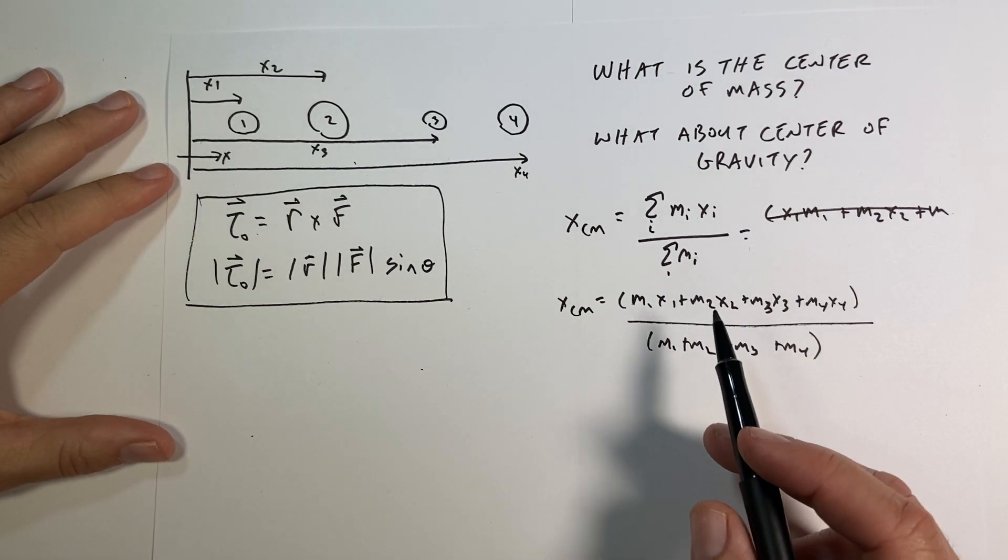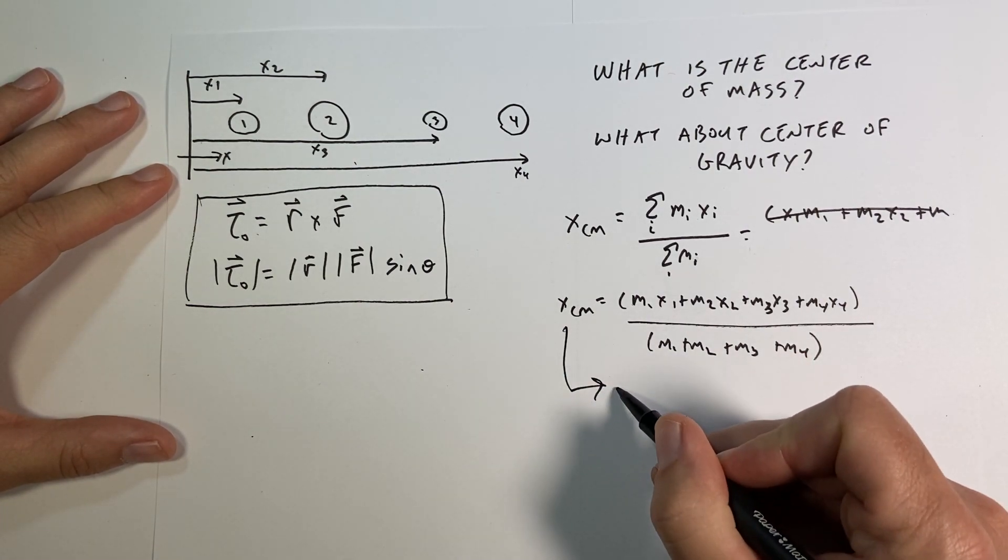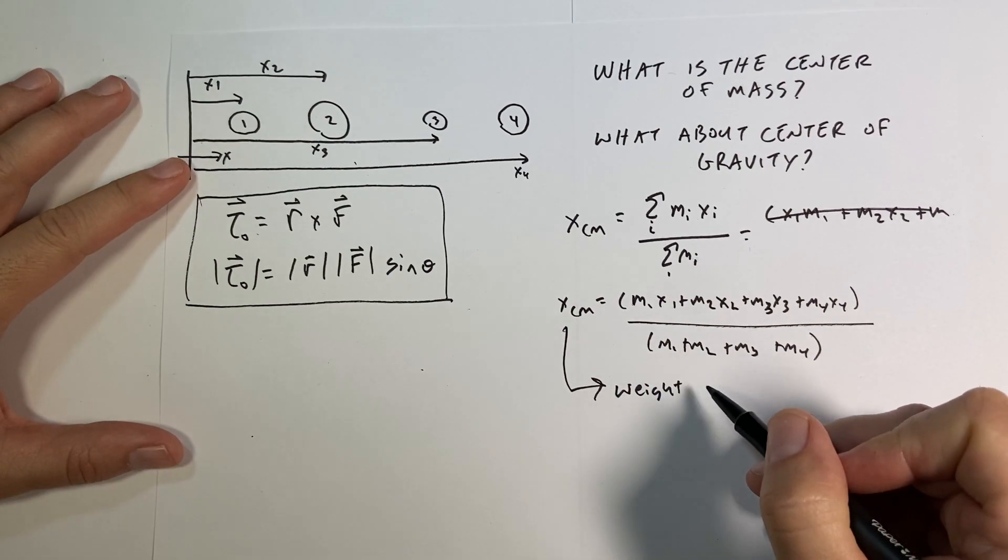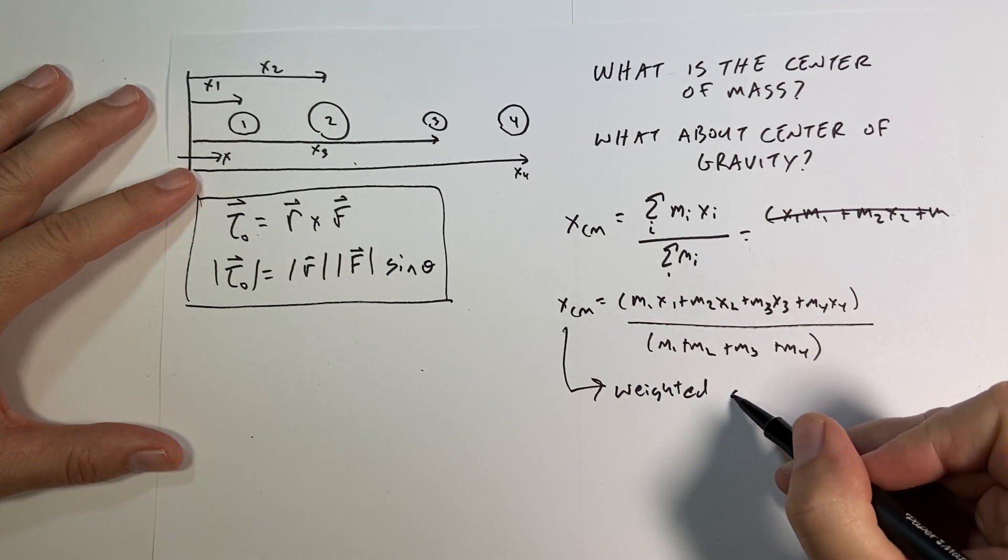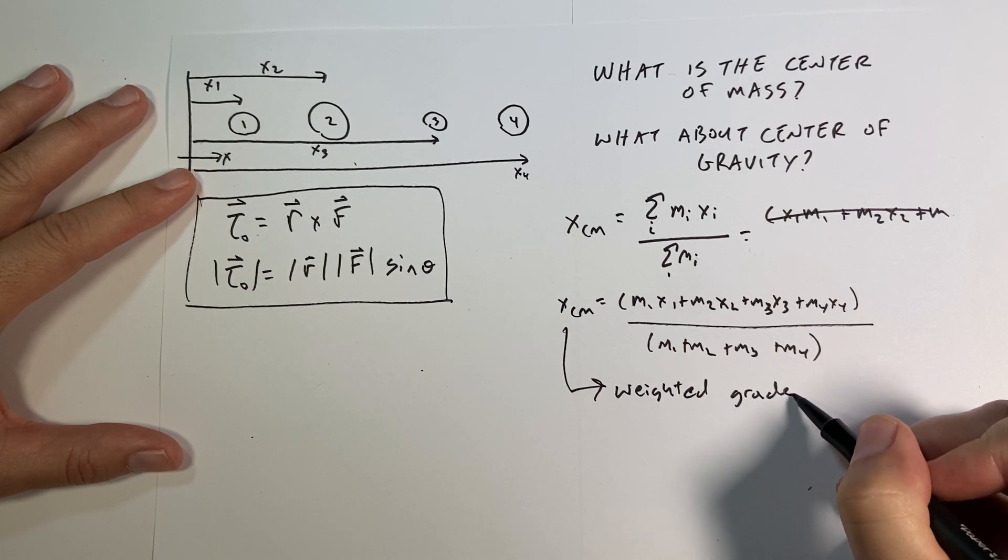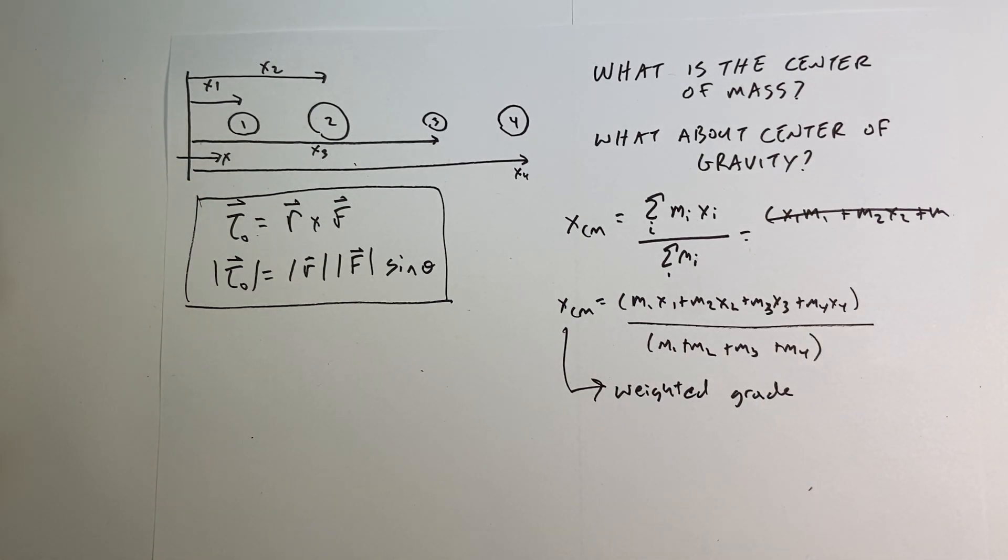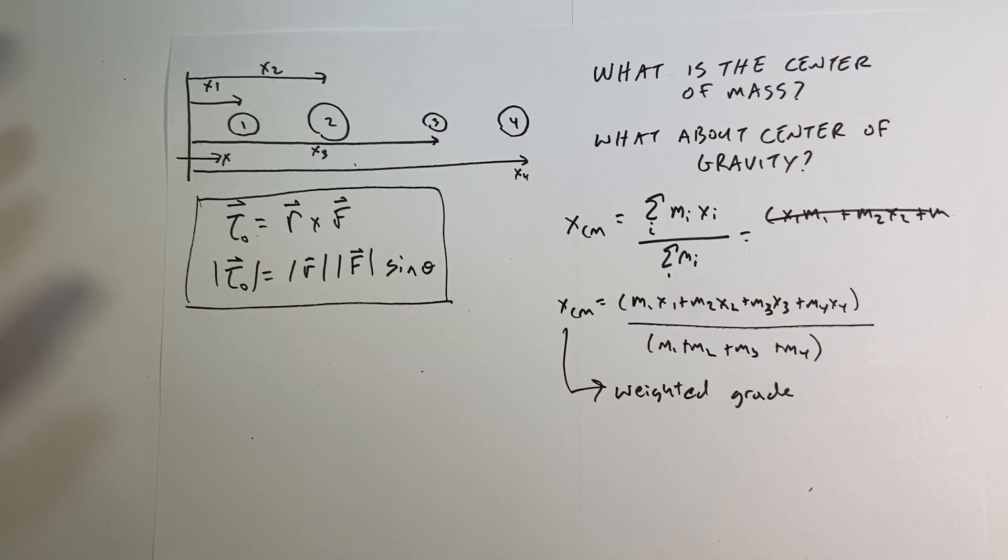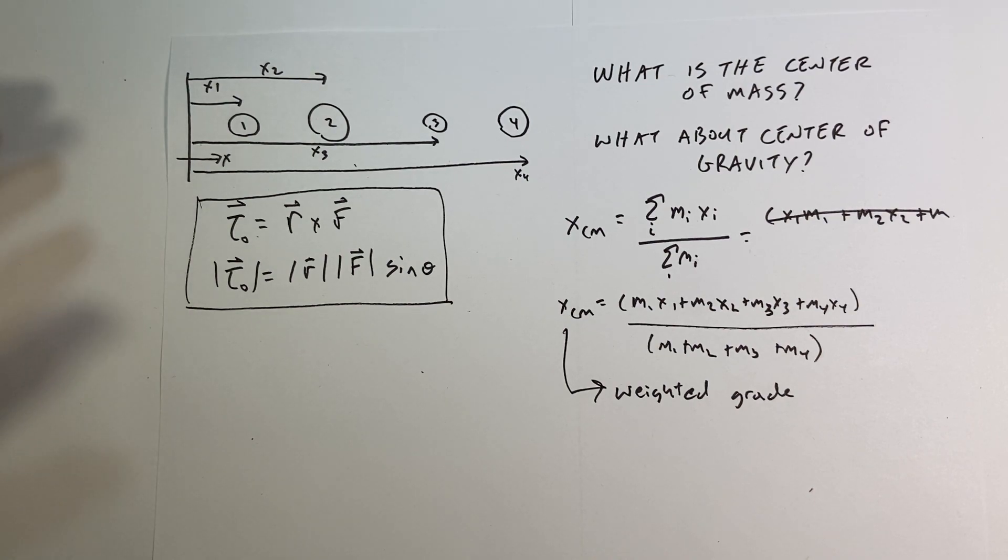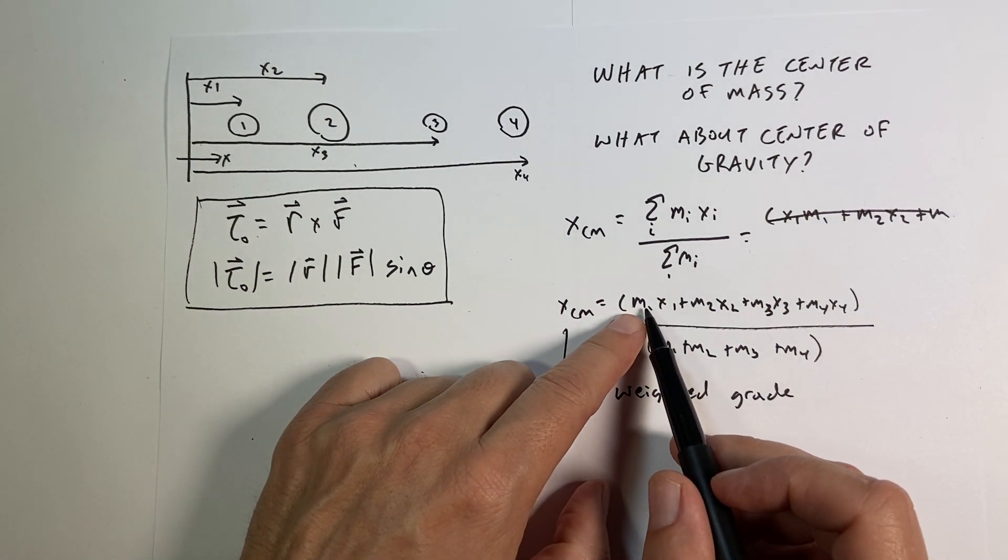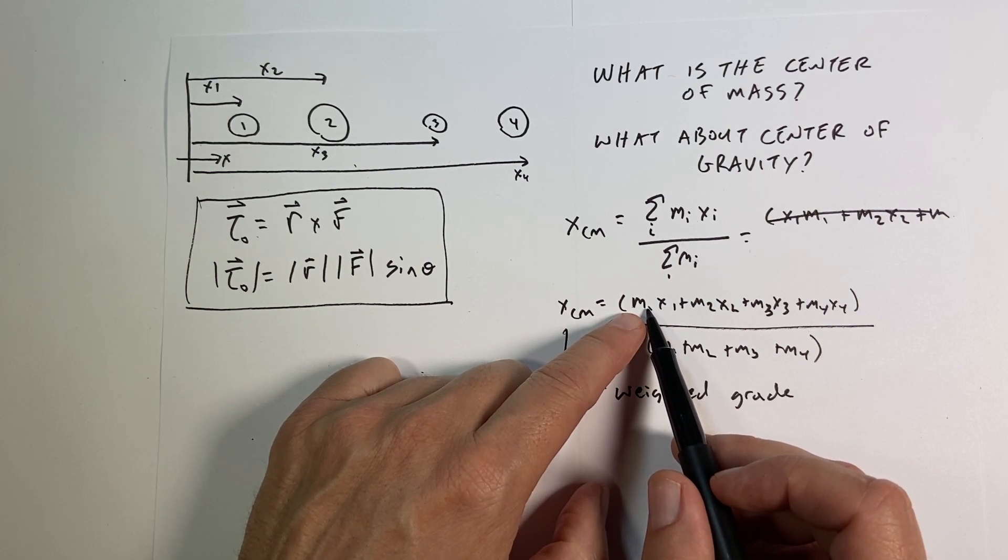This is the same as calculating a weighted grade. So I like to include this because often students will say, I just don't know how to calculate my grade. If the tests are 30% and the homework is 10% and the quizzes are 60%, then if I know my averages on all those, how do I do it?